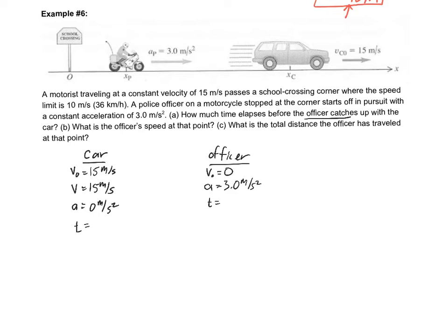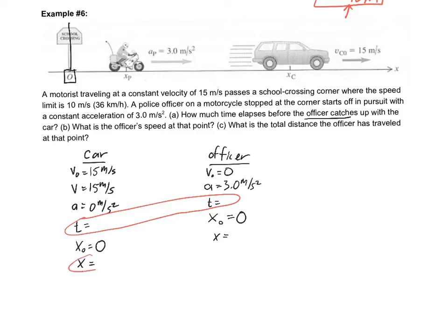The important thing here is that it's not just the time that has to be equal — the position also has to be the same when the officer catches up. Initially, the car is passing the school crossing sign, so we set that as position zero. The officer is also at that sign, so his initial position is zero too. The final positions must be equal, and so must the times — same place, same time.